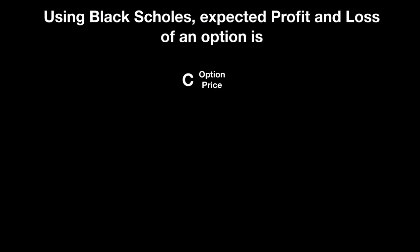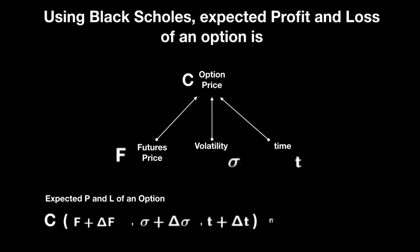Let's begin with quick recall of factors that influence options price. Options price depends on the underlying price, volatility and time to expire. Profit and loss is before and after price difference.